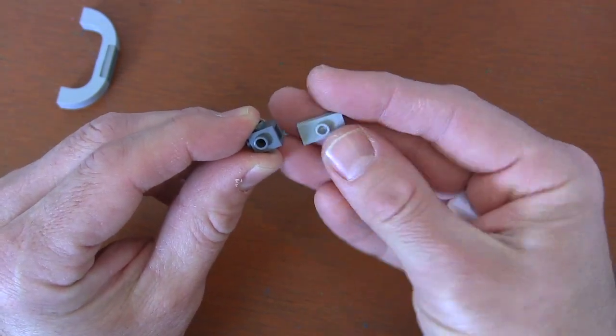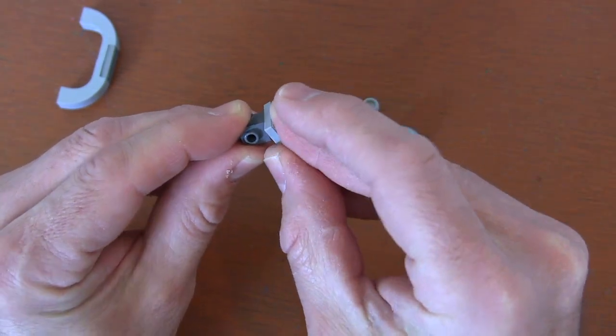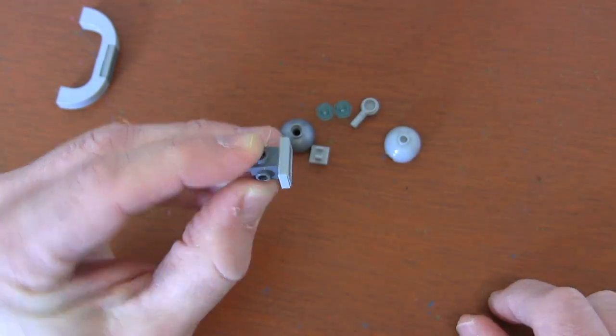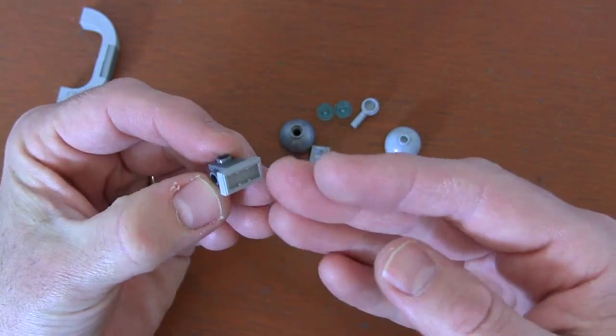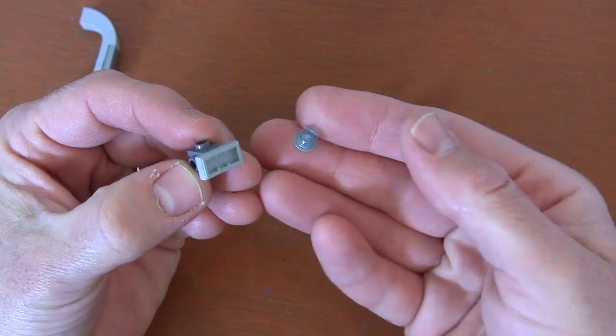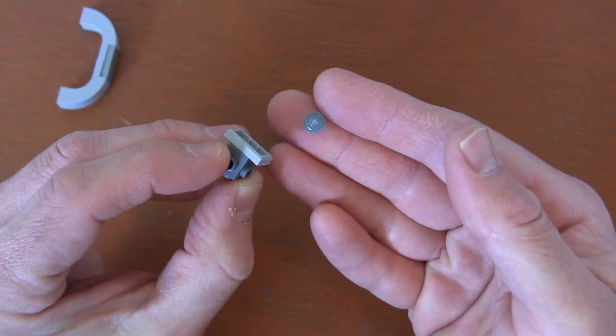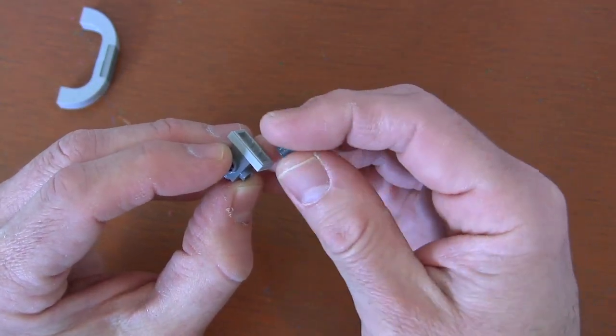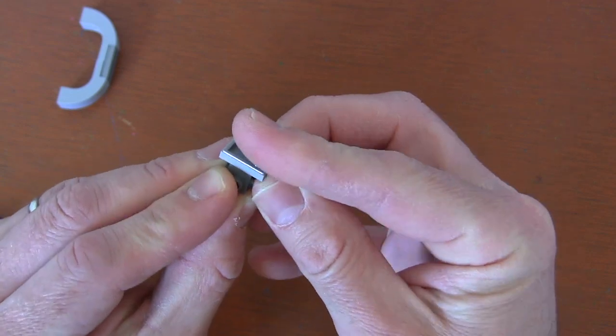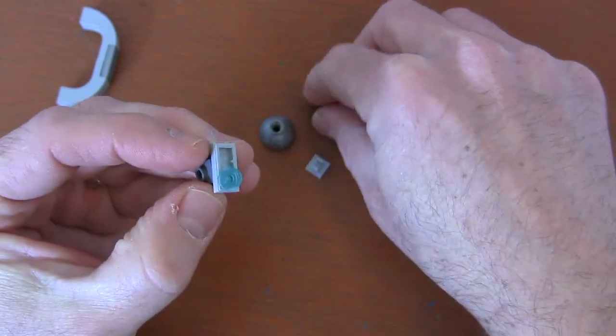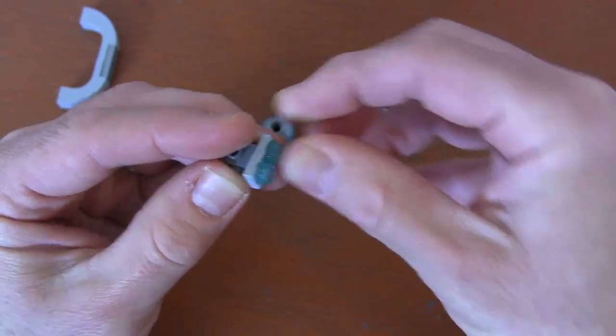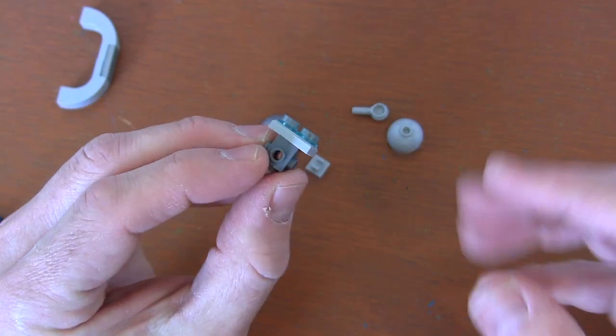To do that, I'm going to get a one by two jumper plate and just put that into the back hole stud there. Then to create this engine effect, I'm going to get two one by one round translucent plates. We're going to put those round translucent plates into the back of our jumper plate to kind of create the engines of our command ship so it can go to different planets to create blockades and drop off the droids.